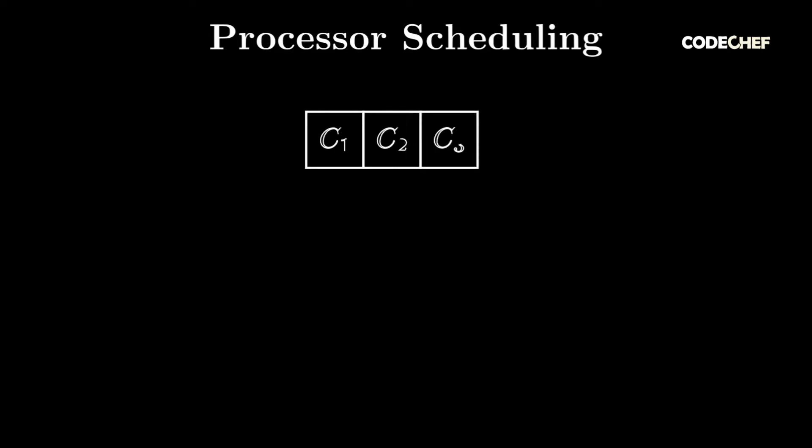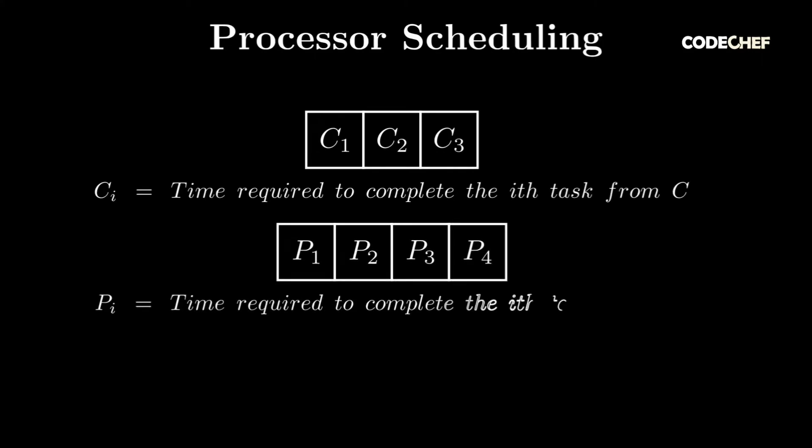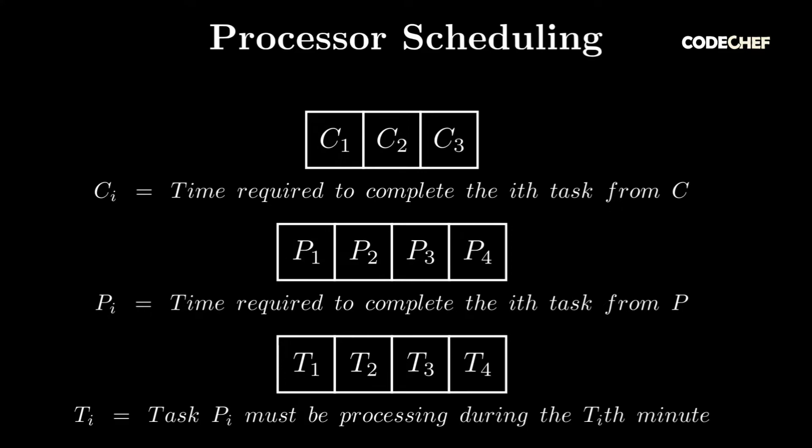This is the first problem from INOI 2019, Processor Scheduling. The problem code for this problem is INOI 1901. In this problem, we're given n plus m tasks. We can only perform one task at a time. We are given an array C, which has the time required to complete the n tasks. We're given an array P, which has the time required to complete the m tasks. We're given an array T, where task P[i] must be processing during the T[i]-th minute. The n tasks in C must be performed in the order given to us. We're meant to determine the minimum time required to finish all tasks, given that we can begin processing tasks from time 1.